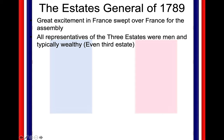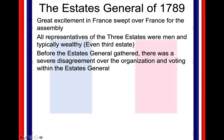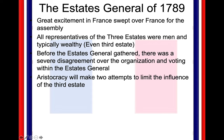All the representatives from the three estates were men — women were not represented. They were typically wealthy, even within the third estate. Now, this is a big problem, because before the Estates General even gathered, there was a huge disagreement over the organization and voting. The aristocracy and the clergy — the first two estates — are going to make multiple attempts to limit the influence of the third estate through voting.